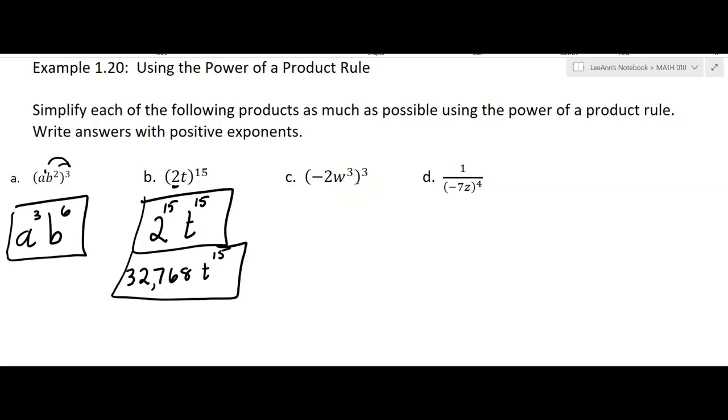Okay, now what about this next one? Well, I'm going to have the negative two, and I've got to cube that. So think of that like a one, and it's three times that one. And then it's going to be w to the ninth. Okay, now the negative two cubed, that's a fairly small number. Negative two times negative two times negative two, that's negative eight w to the ninth.